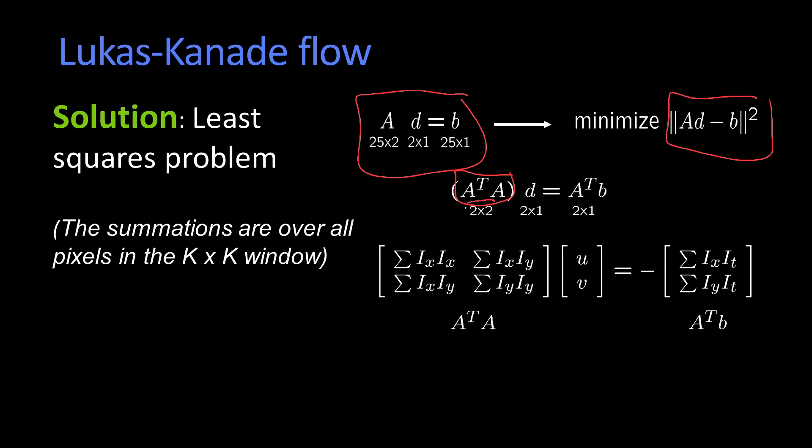So A transpose A is just a 2 by 2, and D is a 2 by 1, and A transpose B is a 2 by 1. And we end up with this equation right here. And these have the terms written out. And these sums are summed over whatever the window is that you're summing over. So a 5 by 5 would be over all those 25 pixels.